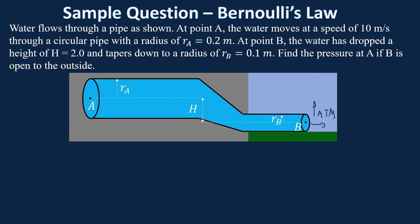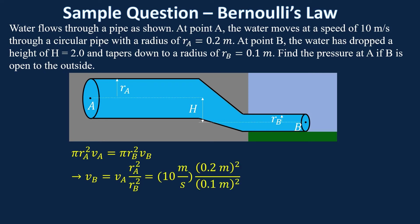Before going into Bernoulli's Law, the first thing we have to do is find the velocity at B, since we have the velocity at A but not at B. We apply the continuity equation: area at A times velocity at A equals area at B times velocity at B. These are circular pipes so area is pi r squared, and the pi's cancel out. That gives the expression for the velocity at B. Plugging in numbers: 0.2 squared over 0.1 squared times 10 gives 40 meters per second.